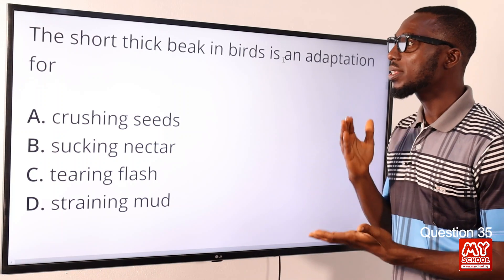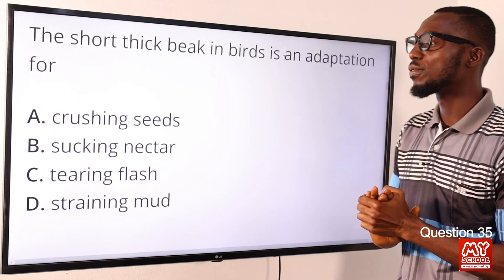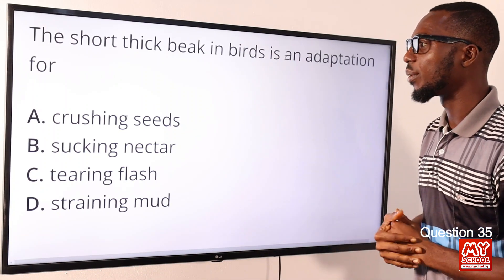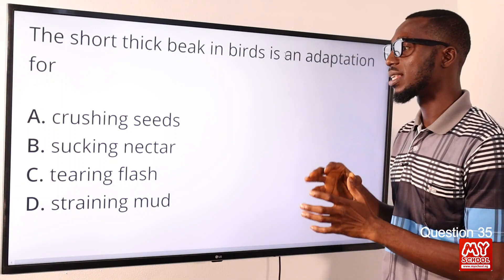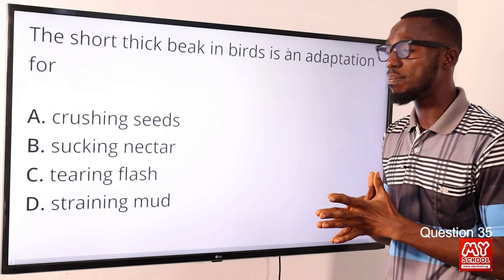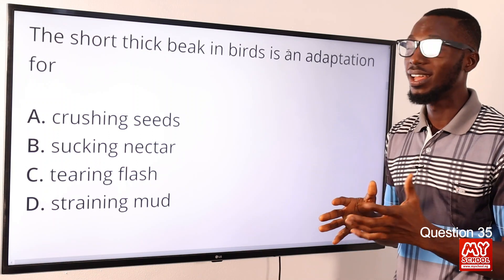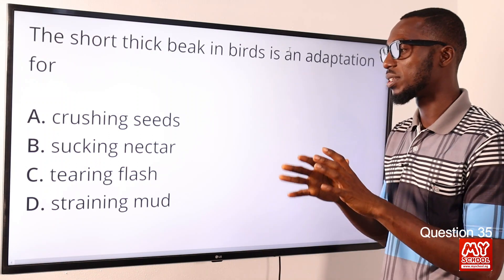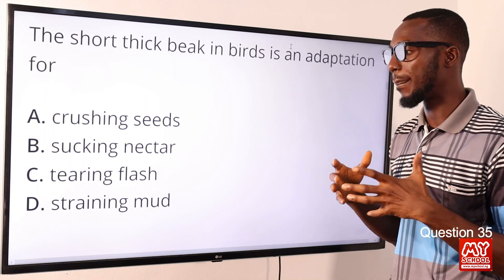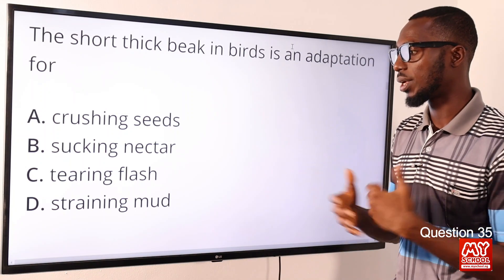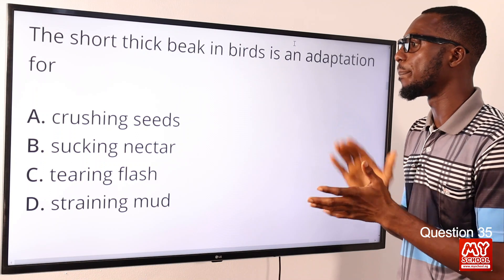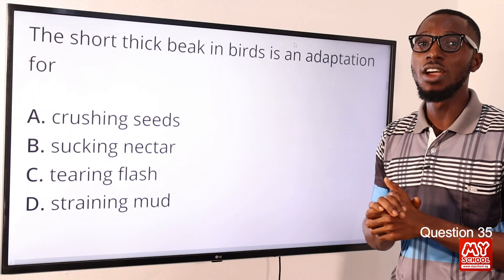Question 35. The short thick beak in birds is an adaptation for what? For crushing seeds — we are looking at sparrows. A sparrow is a very good example for this kind of beak. For sucking nectar we are looking at a long slender kind of beak, for instance the sunbird. Tearing flesh — we are looking at birds of prey, carnivorous birds like eagles, with a strong curved beak. For straining mud we are looking at ducks — flat and grooved. So crushing seeds: the example is the sparrow with a short thick beak. The correct option is option A, for crushing seeds.